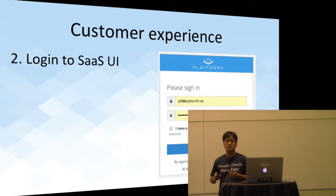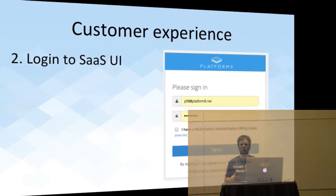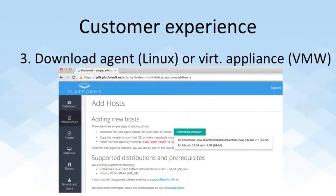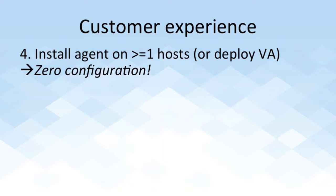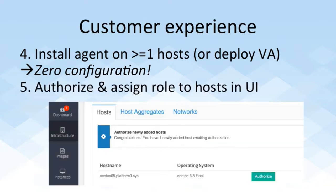In order to do this, the customer logs onto their SaaS UI, goes to the downloads page, and then downloads an agent package if they're using Linux hypervisors in their data center, or maybe a virtual appliance if they are a VMware customer. For every server that the user wants to add to their private cloud, they'll install this agent, and it's completely zero configuration. What that means is as soon as it's installed, the agent will automatically start and connect through the internet to the controller. When the controller detects this, the user is going to see that host just surface up in the UI, awaiting authorization.